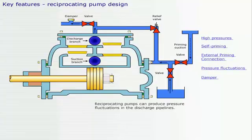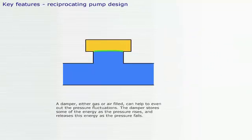Reciprocating pumps can produce pressure fluctuations in the discharge pipelines. A damper, either gas or air filled, can help to even out the pressure fluctuations. The damper stores some of the energy as the pressure rises and releases this energy as the pressure falls.